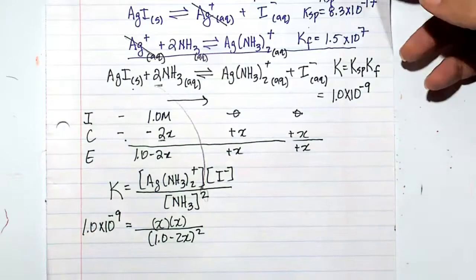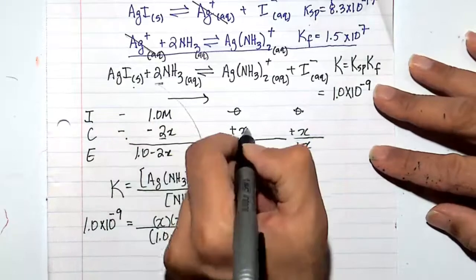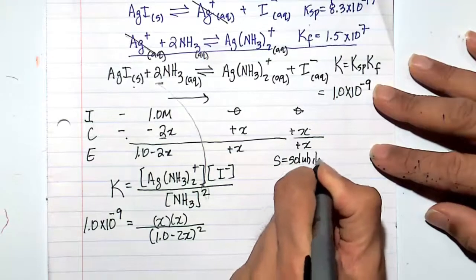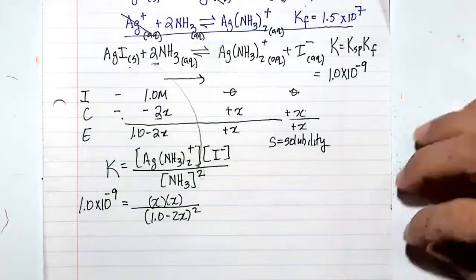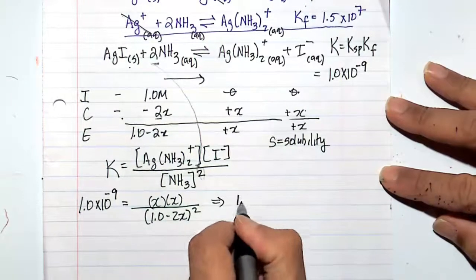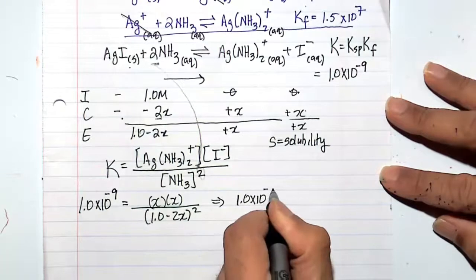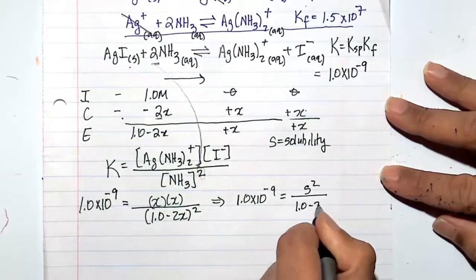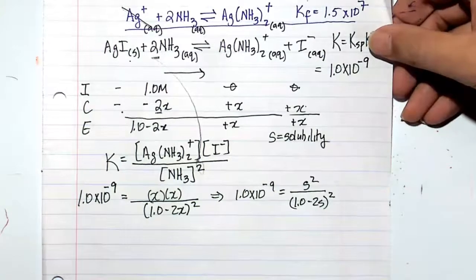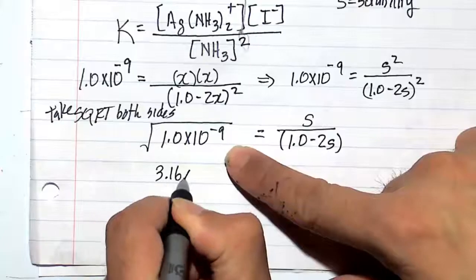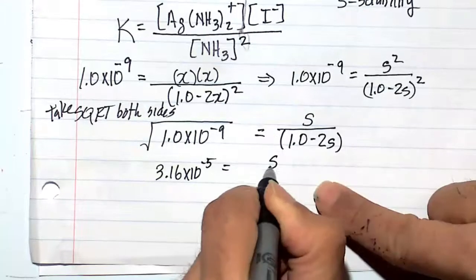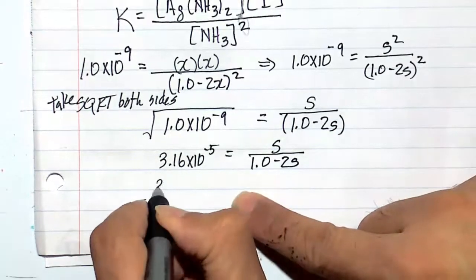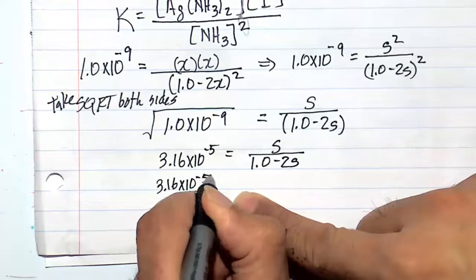Instead of x, let's use the variable s, which stands for solubility. In most of these problems with Ksp, we use s for solubility. So we have 1.0 times 10 to the minus 9 equals s squared over (1 minus 2s) squared. Let's take the square root of both sides of the equation. The square root of 1.0 times 10 to the minus 9 is 3.16 times 10 to the minus 5, and the right-hand side becomes s divided by (1 minus 2s). So we'll solve for s to get our final answer.